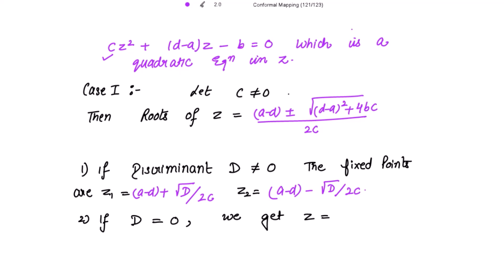Now, if the discriminant is zero, then we get two equal roots, which means we get only one fixed point. That is, z equals (a minus d) over 2c. So when the discriminant is zero and c is non-zero, we get only one fixed point. Please remember this.